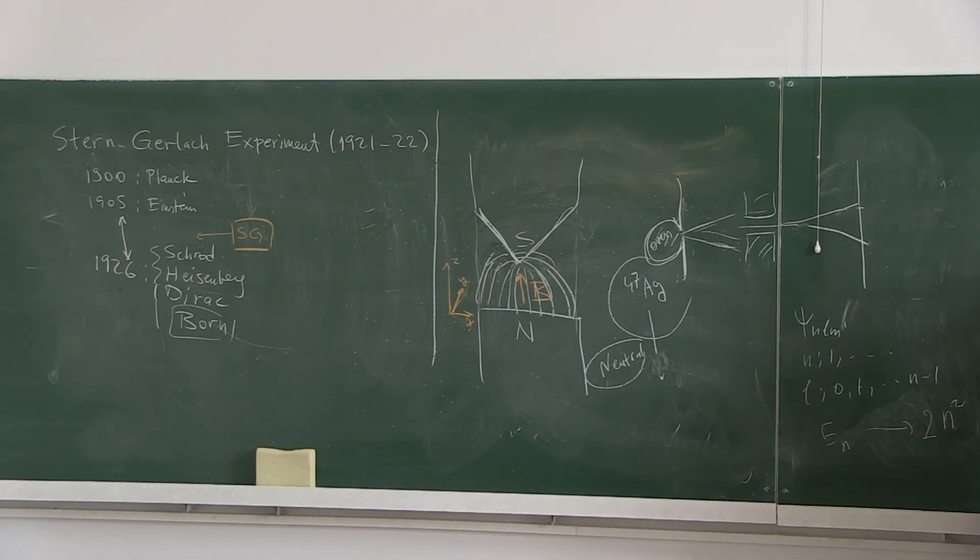If N is equal to 1, the degeneracy is 2 times 1 squared, 2. So there are two places for the electrons. For N equals 2, 2 times 2 squared, 8. N equals 3, 2 times 3 squared, 18.